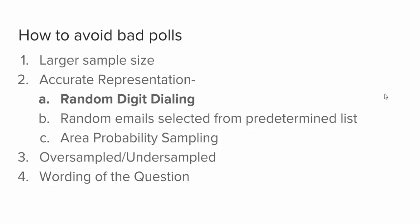Number two is accurate representation. Is the method of collecting the data truly gathering a representative sample, or is it weighted towards certain demographic characteristics? The traditional, and still prevalent, way that pollsters do that is through random digit dialing — letting a computer randomly generate a list of phone numbers in the geographic area of your target sample.